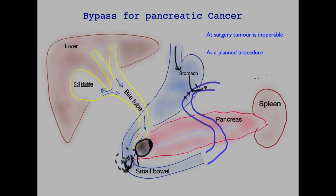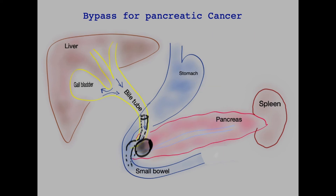To recap, bypasses are performed if at initial surgery the tumour is found to be inoperable, or it may also be performed as a planned procedure due to complications of the tumour itself. If that is the case, patients have to be fit to undergo the procedure and are thought to be likely to survive longer than a few months.